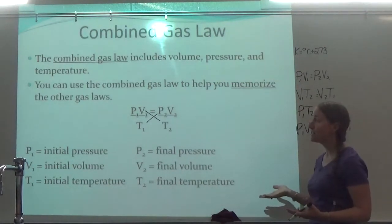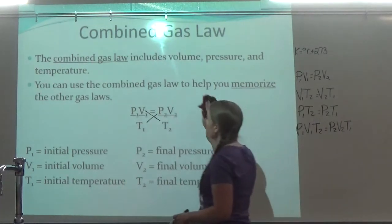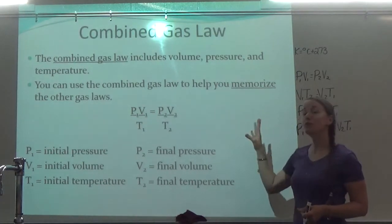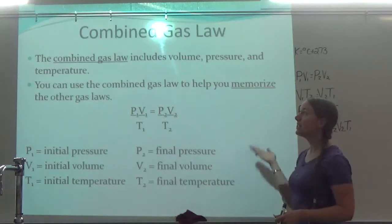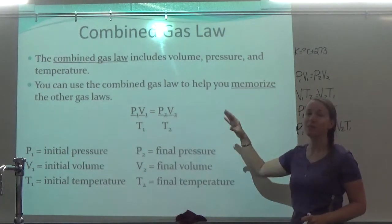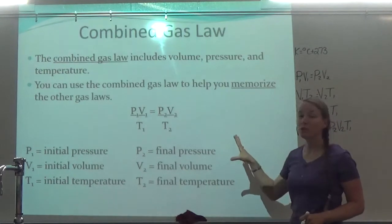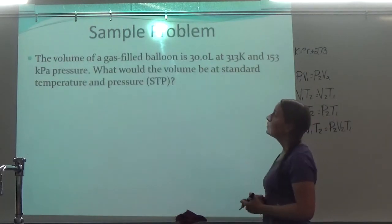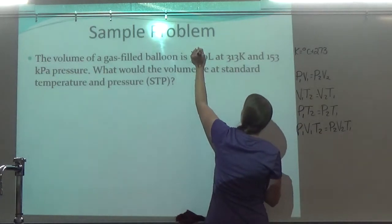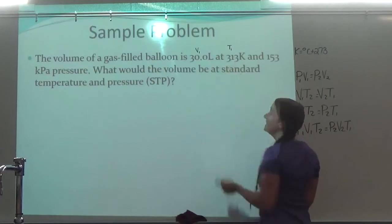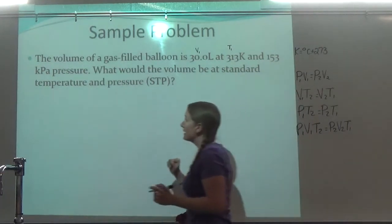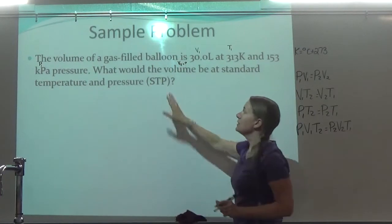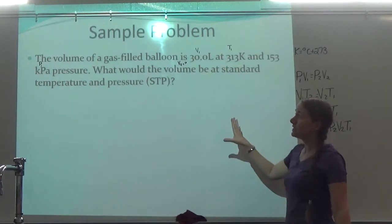The only thing more difficult about combined gas law than the others is that you just have two extra variables; otherwise it works the same as everything else. Now, because you should be getting used to plugging into formulas, I've thrown some little tricks into these problems. The first one says the volume of a gas-filled balloon is 30 liters — there's my V1 — at 313 Kelvin, already in Kelvin, so there's my T1, and 153 kilopascals pressure — there's my P1. What would the volume be — so I'm looking for V2 — at standard temperature and pressure, or STP?